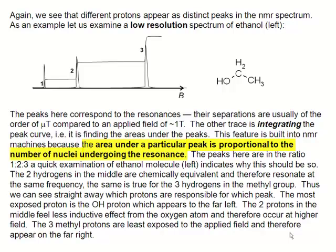That is the integrated area underneath those transitions, is directly proportional to the number of nuclei involved in the transition. So we can see that the one which appears at very low field is a single proton.